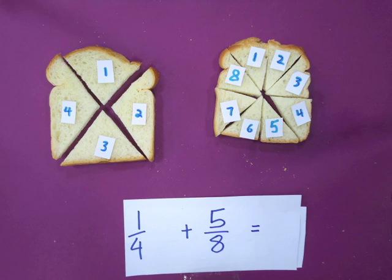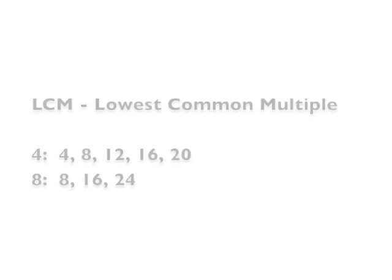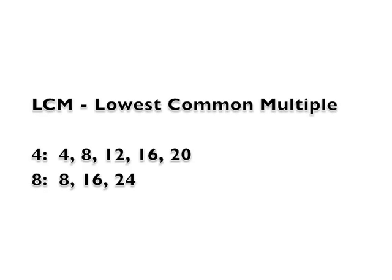Because the denominators are different, we need to change them so that both denominators are the same. To do this, we need to find the lowest common multiple. The multiples of four are four, eight, twelve, and so on. The multiples of eight are eight, sixteen, and twenty-four. We need to find the lowest common multiple that is shared between the two of them. We can see that eight is the lowest multiple that is shared between the two of them.